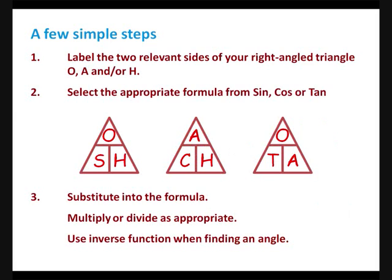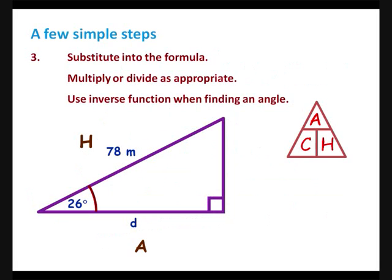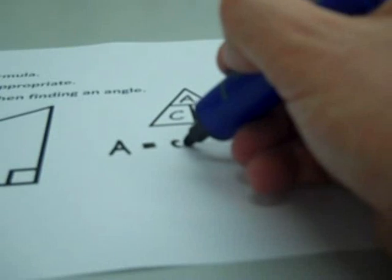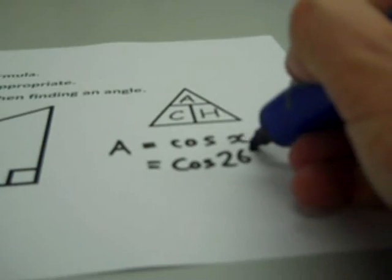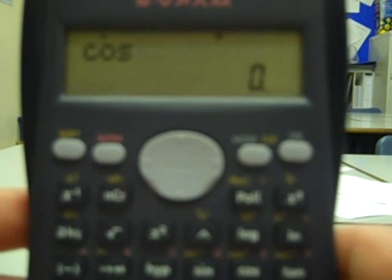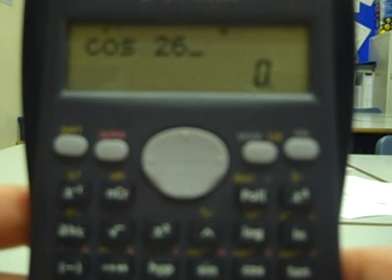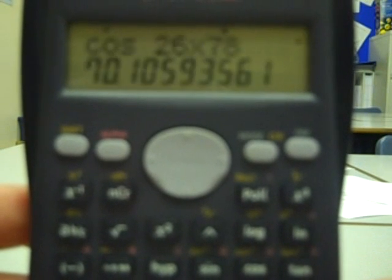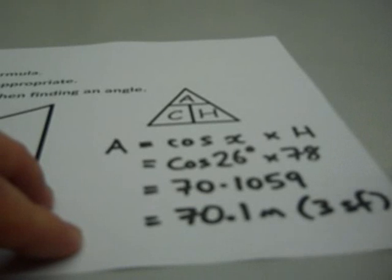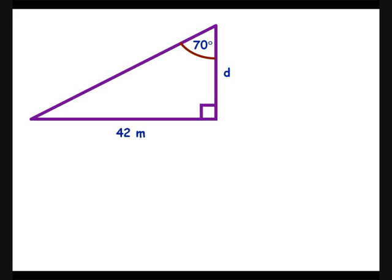Step 3: substitute into the formula, multiplying or dividing as appropriate, and using the inverse function when finding an angle. So let's find some missing values. In our first example, we've already decided to use cos. Covering up the A, we have A equals cos x times H. Substituting, we have cos 26° times 78. Make sure your calculator is in degrees, and we get 70.1059, which rounds to 70.1 metres, correct to three significant figures.